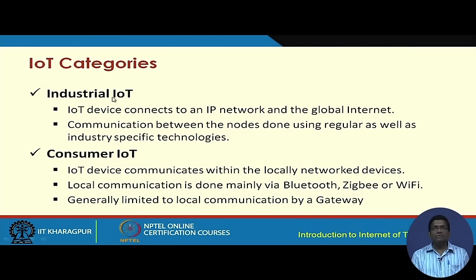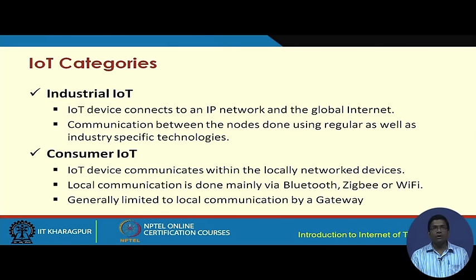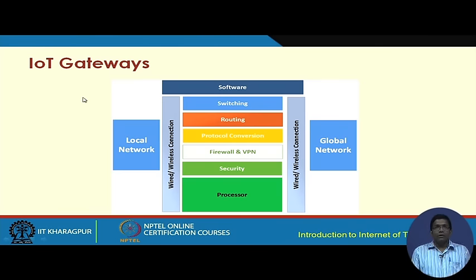Industrial IoT is similar to consumer IoT but the application interest is in the industrial sector. We are talking about manufacturing industries where machines are fitted with different IoT devices with sensors — the node as a whole can communicate with other machines. In industrial IoT, different communication takes place between nodes as well as using different industry-specific technologies.